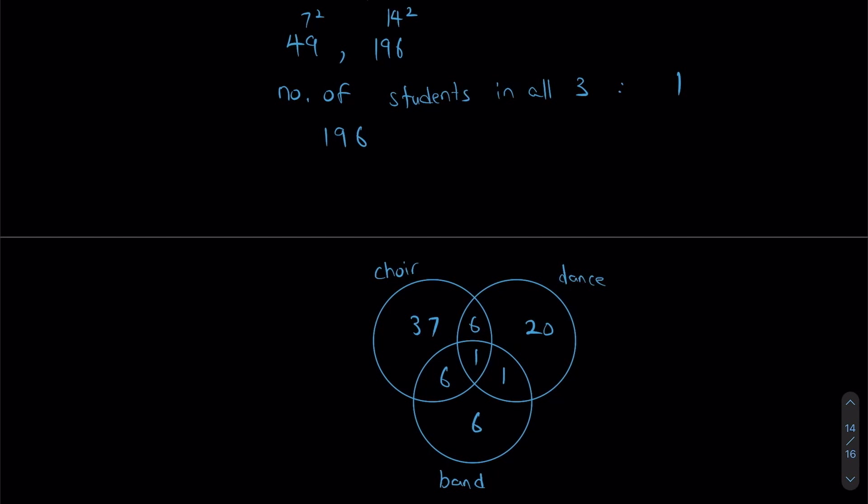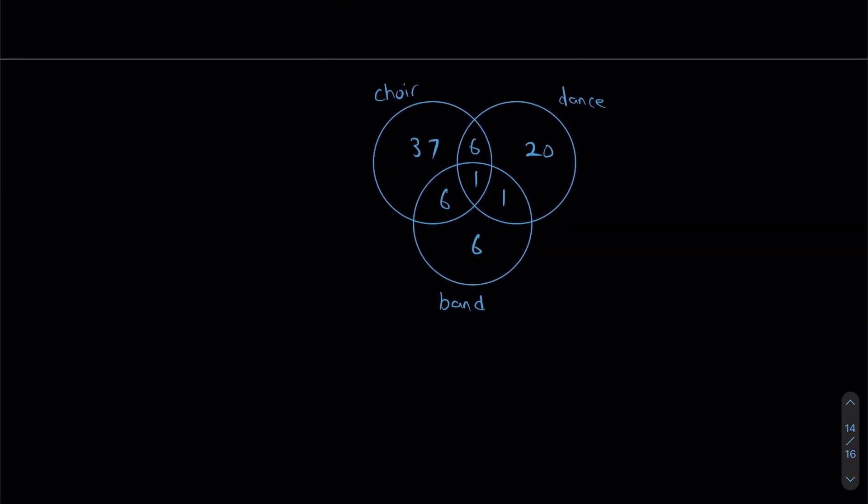So, in order to find out how many students are in one of these CCAs at least, I'm going to add everything together. 37 plus 6, plus 6, plus 1, plus 1, plus 20, plus 6. This number is going to be 77. And we can finally answer our question. What did our question ask? Our question is asking, how many students are in none of these 3 CCAs? 200 minus 77. That's going to give us 123. So, it's a pretty lengthy question as you can see. But, by working out everything logically step by step, we'll get to the final answer.